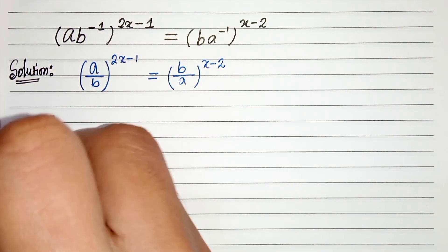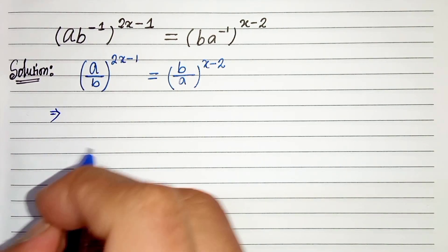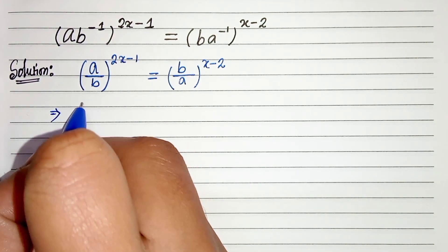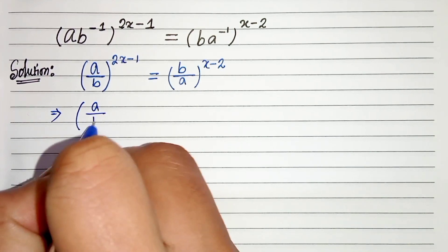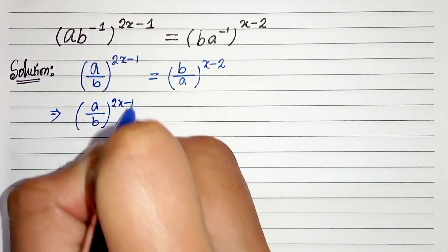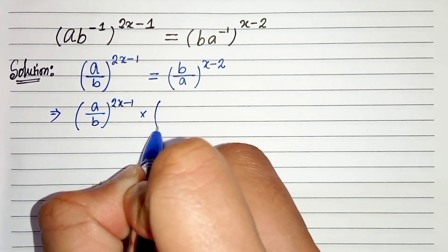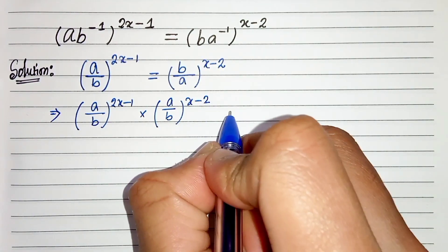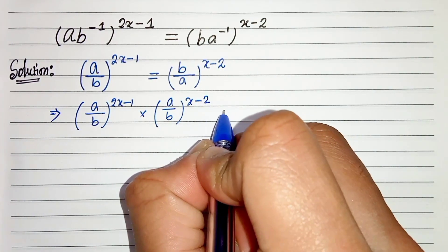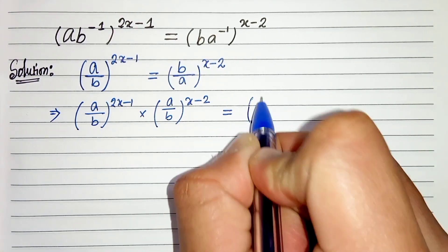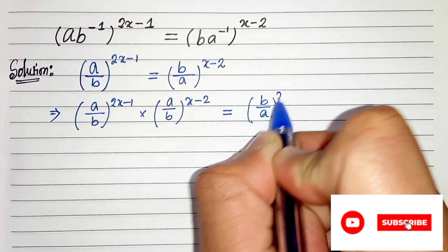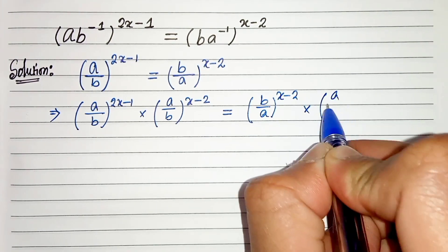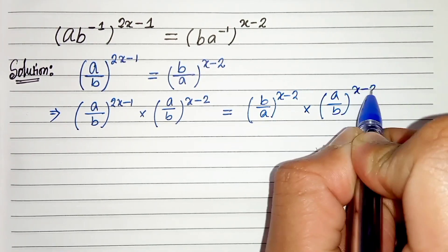In the next step, we will multiply both sides by (a/b)^(x-2). So the left side becomes (a/b)^(2x-1) times (a/b)^(x-2), and the right side becomes (b/a)^(x-2) times (a/b)^(x-2).